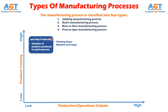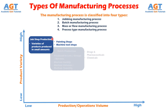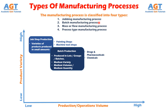Batch Manufacturing Process is used to produce limited quantities of each of the different types of products in the form of batches. These batches of different products are manufactured on the same set of machines. Different batches or products are produced separately one after the other.